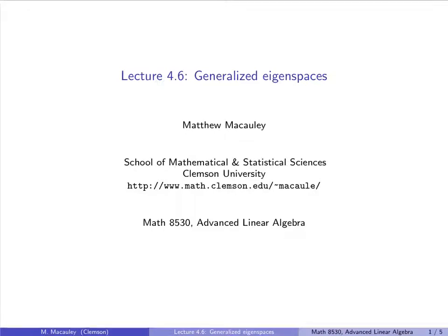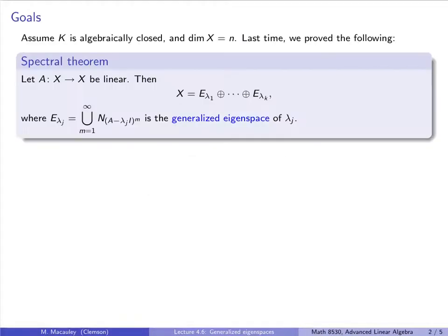Welcome to lecture 4.6: Generalized Eigenspaces. We will continue to assume that k is an algebraically closed field and X is an n-dimensional vector space over k.